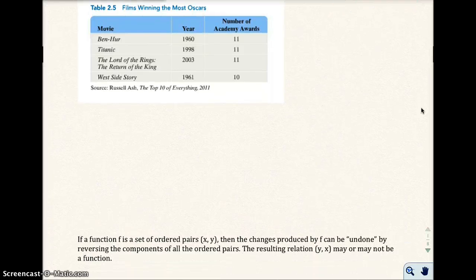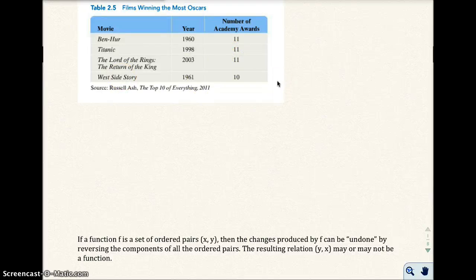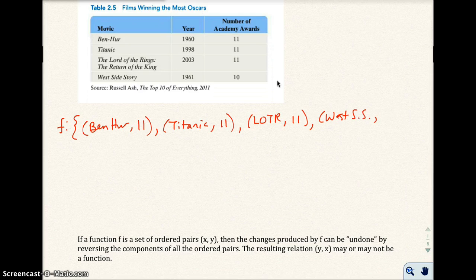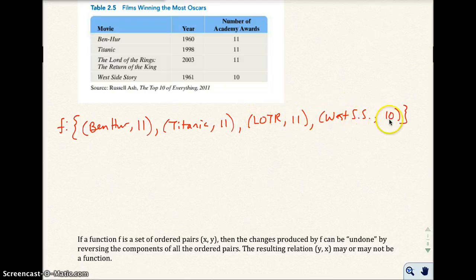So it's like table 2.5, and we're looking at films winning the most Oscars. We have Ben-Hur, which won 11 Oscars; Titanic won 11; Lord of the Rings won 11; and West Side Story won 10 Oscars. Looking at the relation and each ordered pair — Ben-Hur won 11 Oscars, Titanic won 11, Lord of the Rings won 11, and West Side Story won 10. That's a function because if I typed in Ben-Hur, it would only pop out 11 Oscars; Titanic would only pop out 11 Oscars; Lord of the Rings, 11 Oscars; West Side Story, only 10 Oscars.